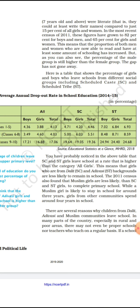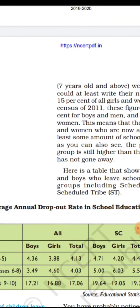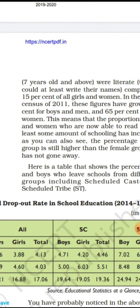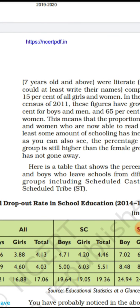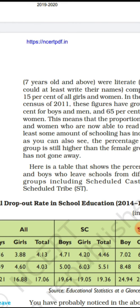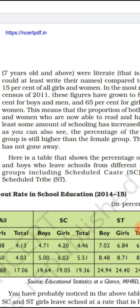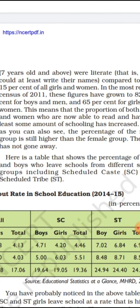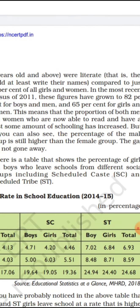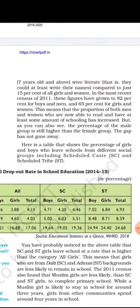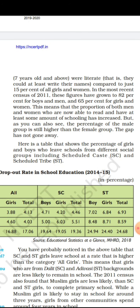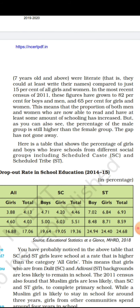In 2011, these figures have grown to 82 percent for boys and men, and 65 percent for girls and women. Now we study about the 2011 census, which is our latest census. Boys have grown to 82 percent and girls to 65 percent, but the differentiation has not gone away. The percentage has grown, but as you can see the percentage of the male group is still higher than the female group. The gap has not been eliminated.